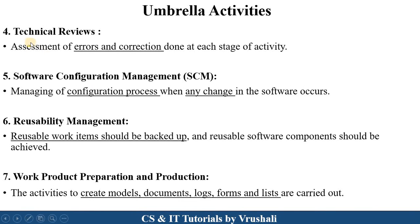The next umbrella activity is technical reviews. In a technical review, if any errors occur in a particular phase — for example, errors in the modeling phase — those errors are solved before moving to the next phase. If there are errors in the construction phase, they are solved before moving to the deployment phase. Technical review means assessment of errors and their correction at each and every stage of the activity.